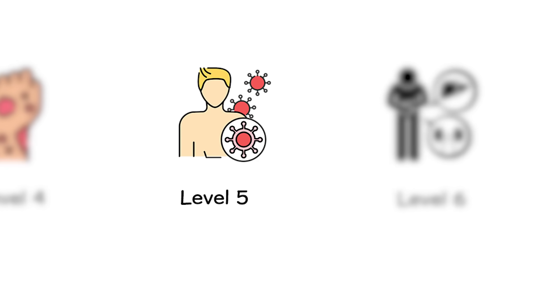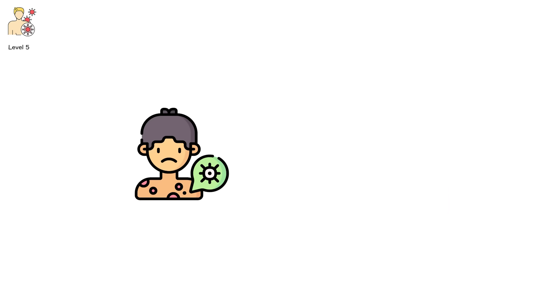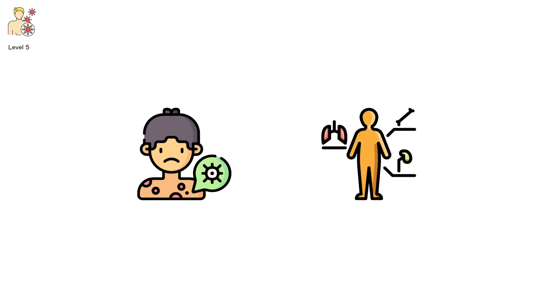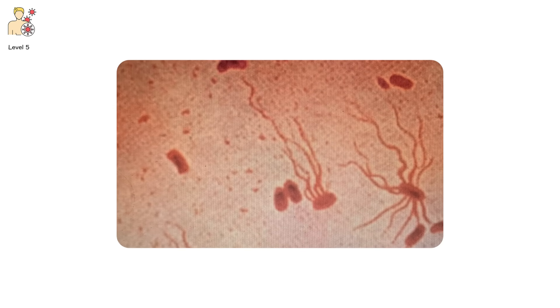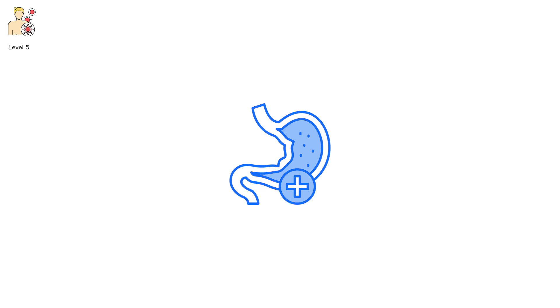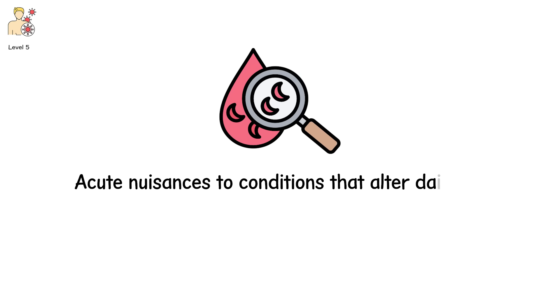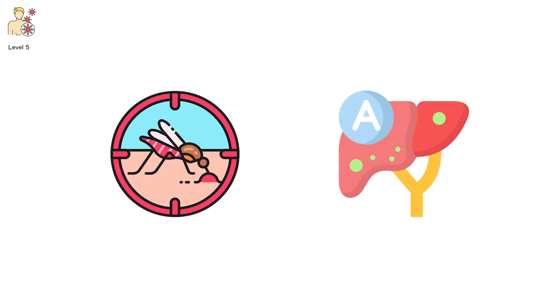Level 5. Now the body stops whispering and starts screaming. This is no longer a sniffle you walk off or a rash you ignore. This is disease as a system-wide disruption, where your organs begin talking to each other in panicked tones, where symptoms don't just localize, they collaborate. A good example? Typhoid fever. Caused by Salmonella typhi, it's a bacteria that doesn't settle for the stomach. It wants the bloodstream. It wants the whole body. You get a high fever, 104 degrees Fahrenheit and rising, coupled with weakness, loss of appetite, and delirium. It's not just a digestive problem. It's a full-body siege. At this level, diseases move from acute nuisances to conditions that alter daily life. Think hepatitis A. Think dengue. Think malaria.